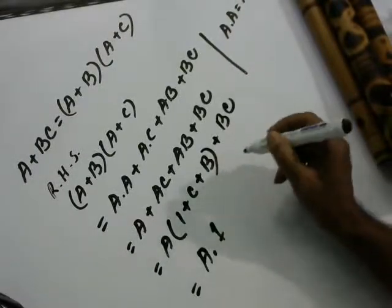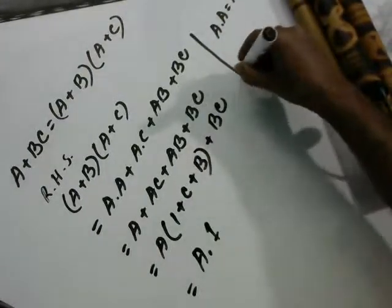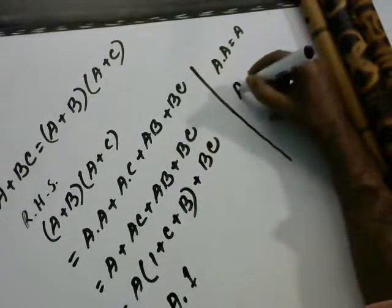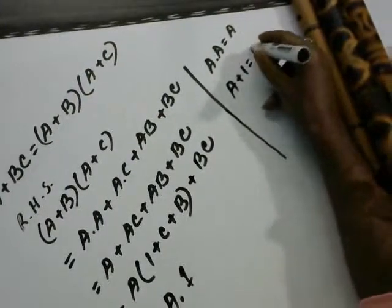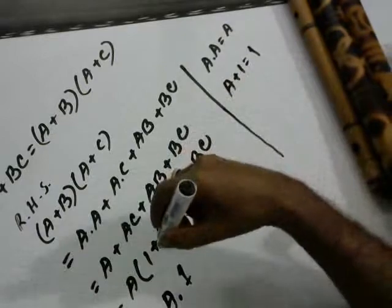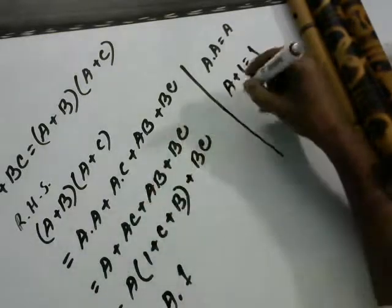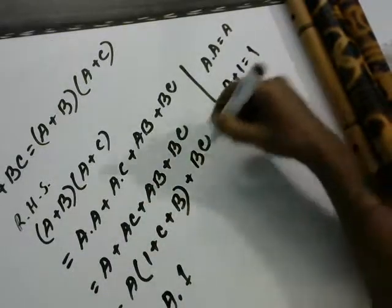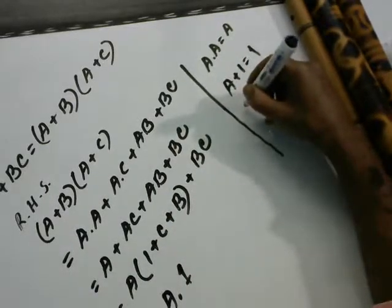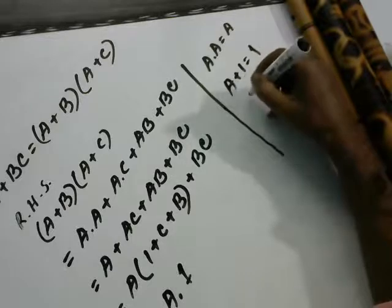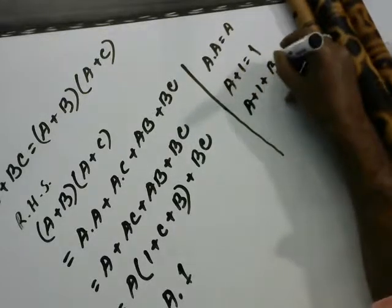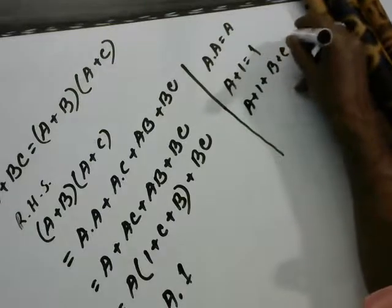This value is 1 because we know that in logic A plus 1 equal 1. That is why A plus 1 equal 1, C plus 1 equal 1, and now 1 plus B equal 1. If you add something to 1 in logic, A plus 1 plus B plus C that is equal 1.